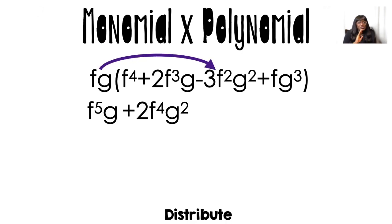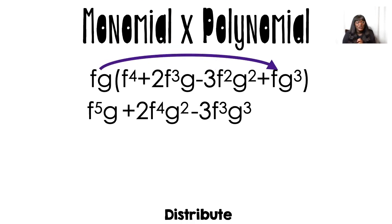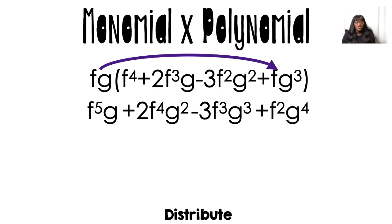Now I'm going to do fg times negative 3f squared g squared, which gives me negative 3, f times f squared is f cubed, and g times g squared gives me g cubed. Then for the last one: f times f is f squared, g times g cubed gives me g to the fourth power. You want to distribute into everything — basically all we're doing the whole time is a lot of distributing.